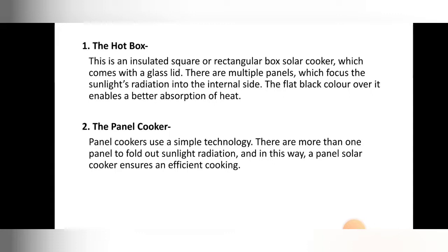The second type is the panel type solar cooker. Panel cookers use a simple technology where more than one panel folds out to capture sunlight radiation. This ensures efficient cooking — more panels mean more sunlight absorbed, more heat generated, and therefore more food cooked, increasing the cooking efficiency.